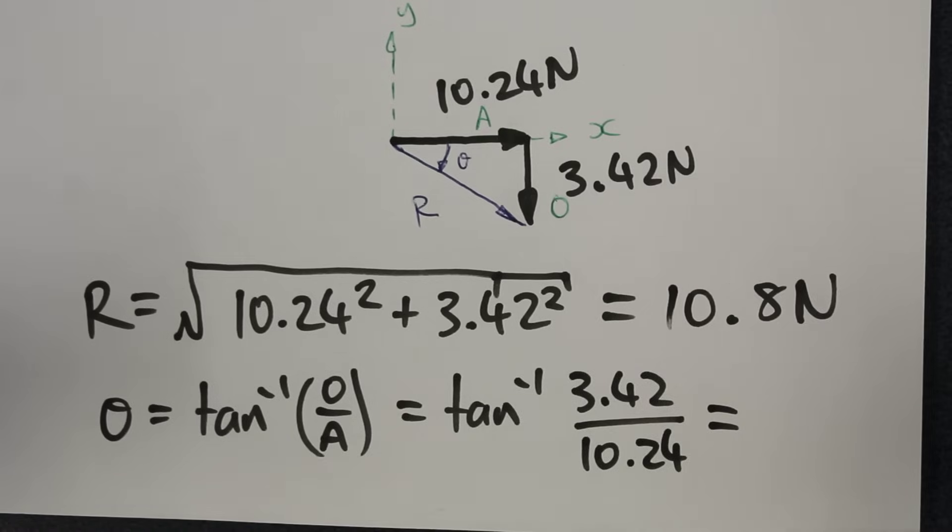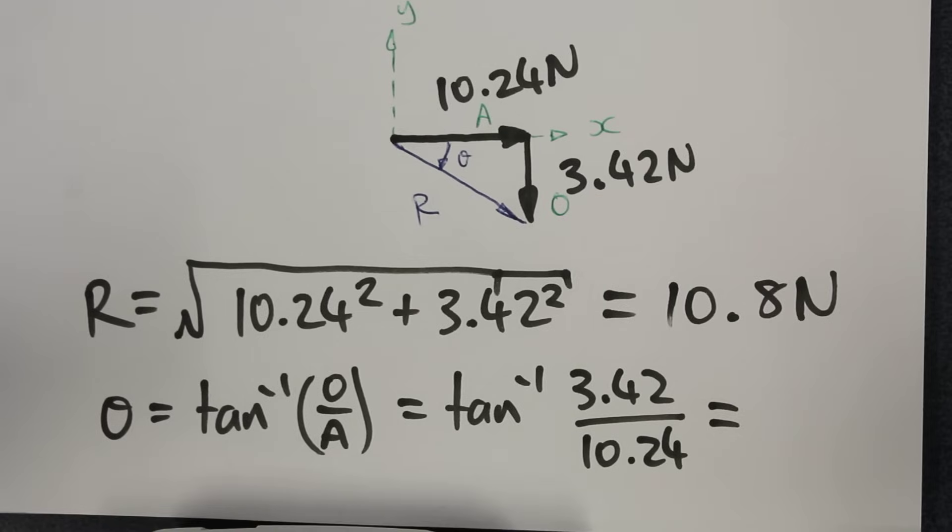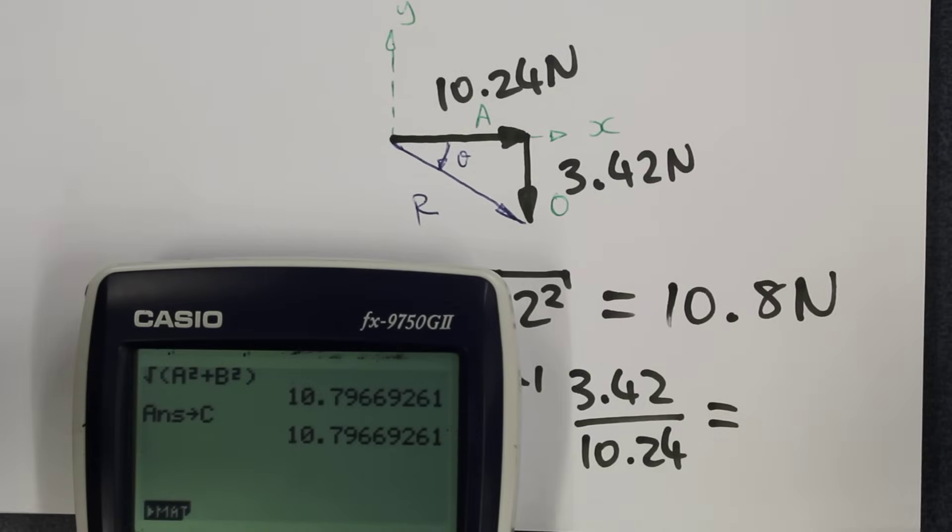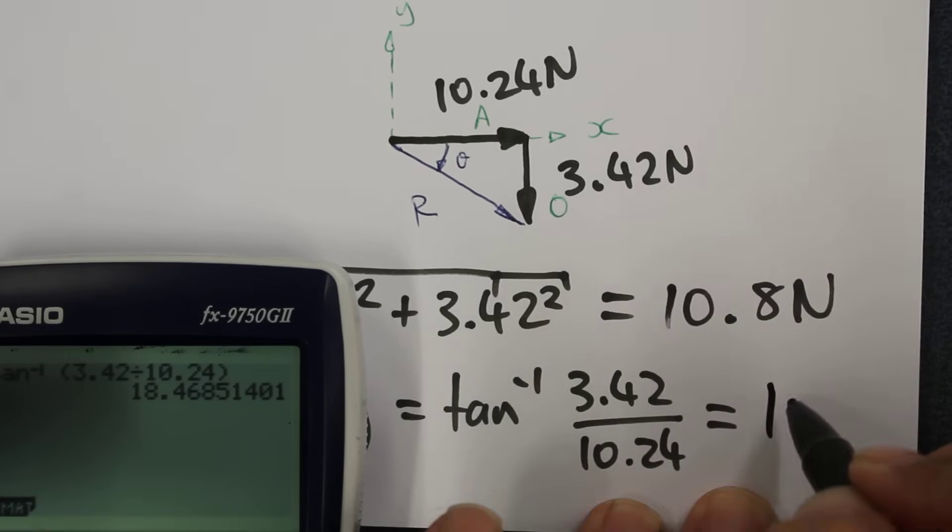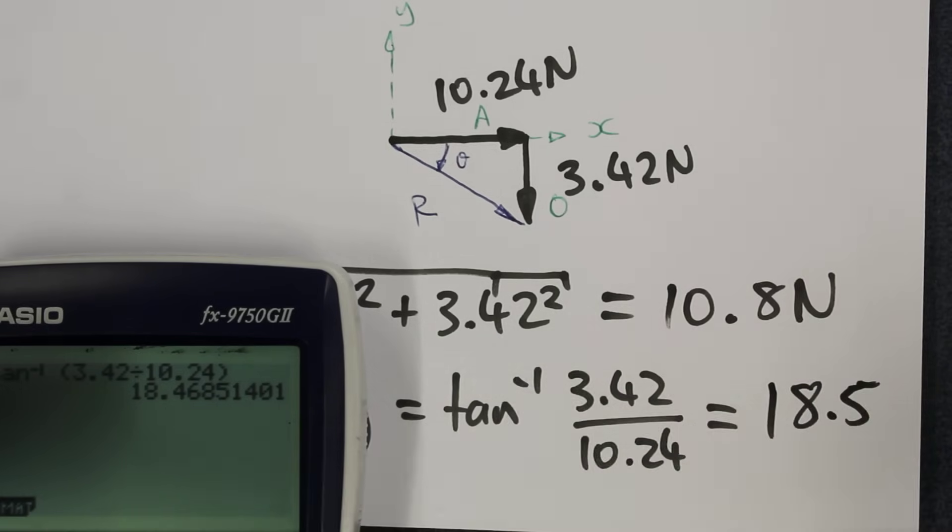Our angle as measured in the negative direction will be equal to the inverse tan of 3.42 divided by 10.24. So we get 18.5 as our angle. I've actually stored these numbers inside the letters a and b inside my calculator, so I can use alpha b divided by alpha a and change this to the positive value and go shift tan of that answer to get a more precise value for the angle.